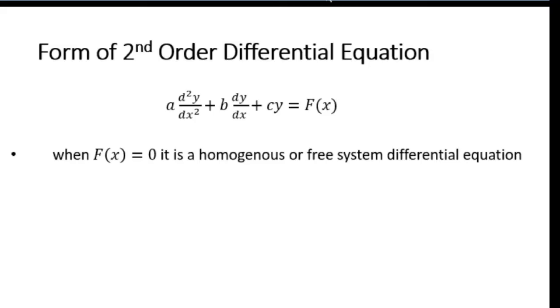So when this function on your right hand side is zero, which means that there is no f of x on this side, no function with respect to the independent variable, then it is called a homogeneous differential equation.